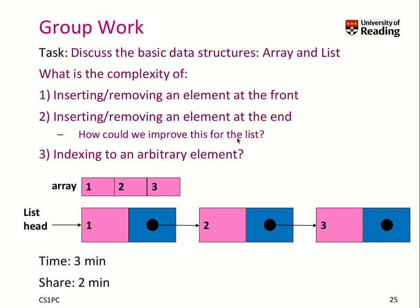How would it be to remove an element here at the end — so element 1 — how long would this take? And how long would it take to get an element at position 2, 5, or something like that — at an arbitrary position? Imagine that there are N elements in this list. Think about it and try to write down the complexity.